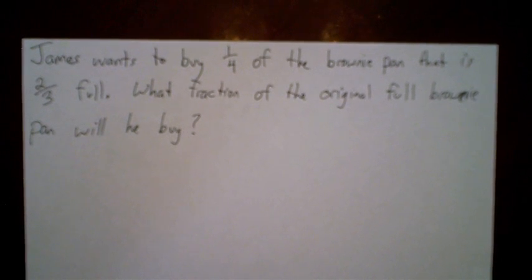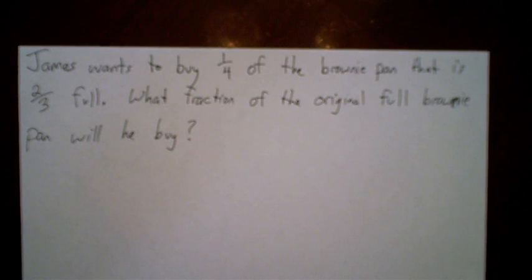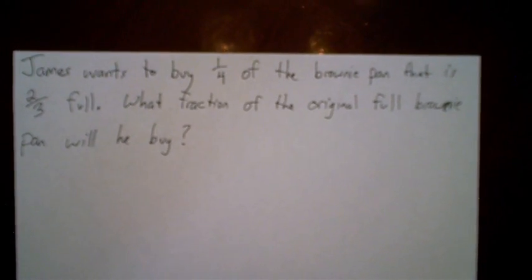So this is the problem we're going to be looking at today and using the brownie pan method to solve. It says James wants to buy one-fourth of the brownie pan that is two-thirds full — because remember we only started off with two-thirds of the brownie pan. What fraction of the original full brownie pan will he buy? So if he buys one-fourth of what's left, what fraction of the original entire pan would he have bought? That's what we're trying to figure out.